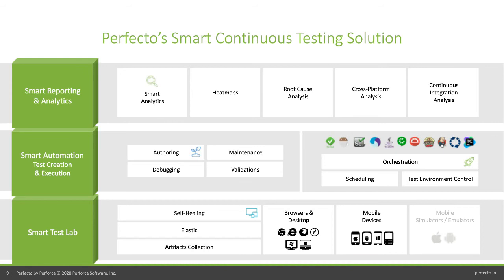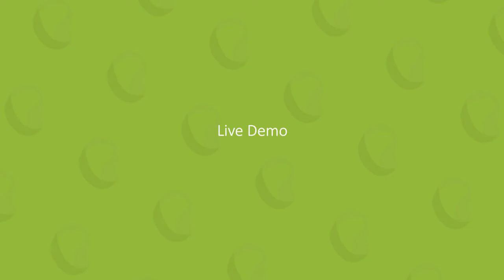At the top layer, smart reporting and analytics: heat maps showing test performance across devices and browser-OS combinations, root cause analysis with failure tagging to understand why tests fail, cross-platform analysis viewing results from both web and mobile in a single pane of glass, and continuous integration analytics showing how tests are performing from within your CI/CD tool.